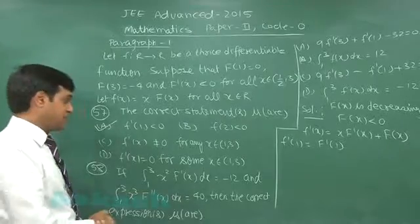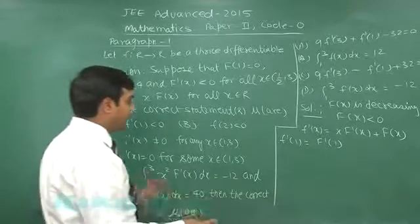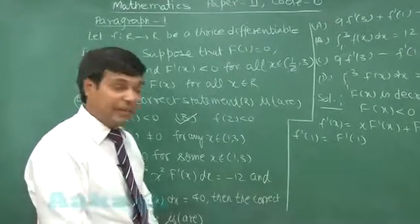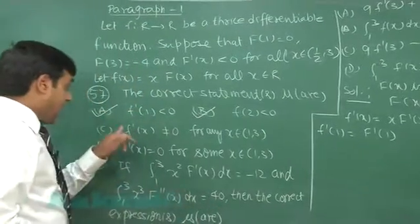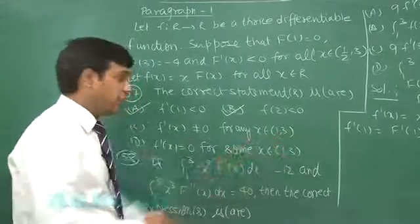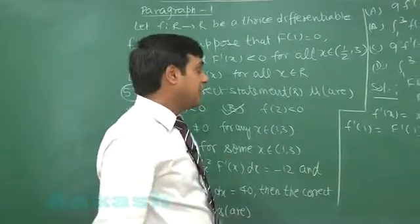So clearly we can see here that small f dash 1 is less than 0 since the function is negative. So small f dash 2 is also negative. F dash x is not 0 for any x in the interval 1 to 3.